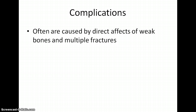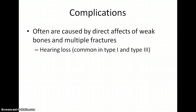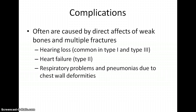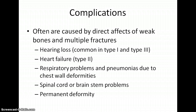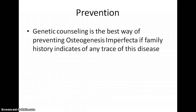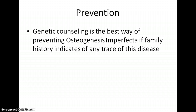Complications of having OI in general include multiple fractures and hearing loss due to improper formation of the ear bones, heart failure in type 2 (which is why most do not live past the first year), respiratory problems and pneumonia since the chest wall does not form correctly, and spinal cord and brain stem problems due to vertebrae not forming correctly. Prevention is best addressed through genetic counseling to assess the likelihood of a child being affected with OI. There is no cure, but scientists are currently looking into gene therapy as a way to treat the disease.